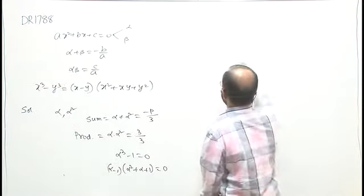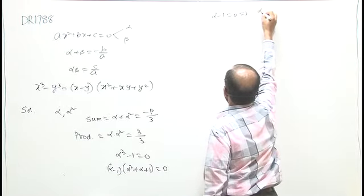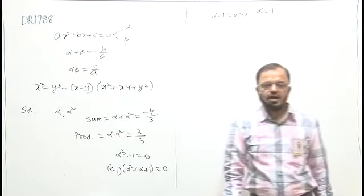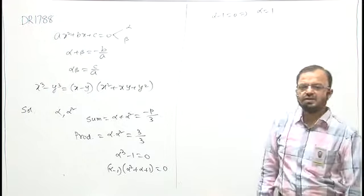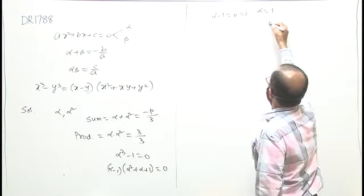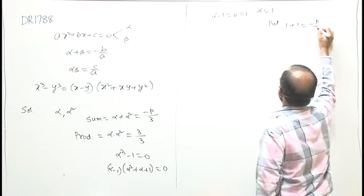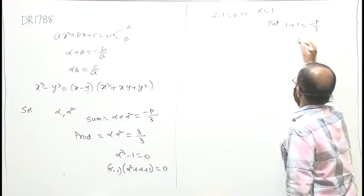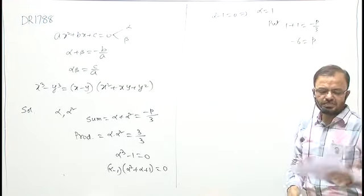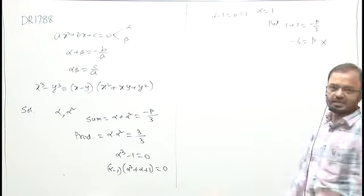Coming to the first factor — if alpha minus 1 equal to 0, यहाँ पर alpha equal to 1 मिल गया है. यहाँ पर P की value निकालने के लिए, अगर put करें, तो मिल रहा है: 1 plus 1 is equal to minus P by 3, that is P equal to minus 6. According to the question, P must be positive, हम इसको reject कर देंगे.